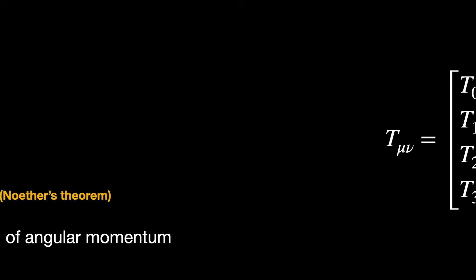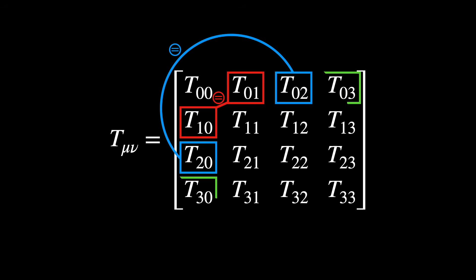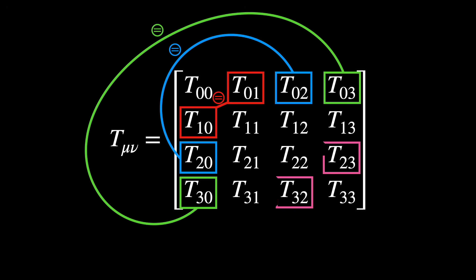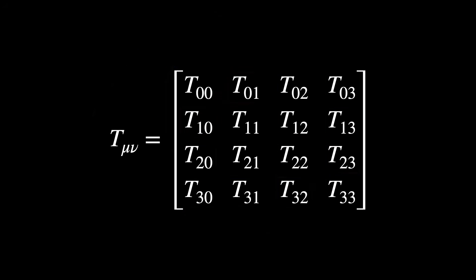Mathematically, this conservation law emerges when the tensor is symmetric. So, T mu nu is equal to T nu mu. T 01 is equal to T 10, and T 02 is equal to T 20, and so on. Basically, these triangular regions are the same.